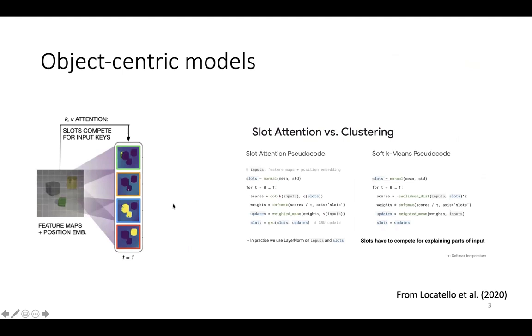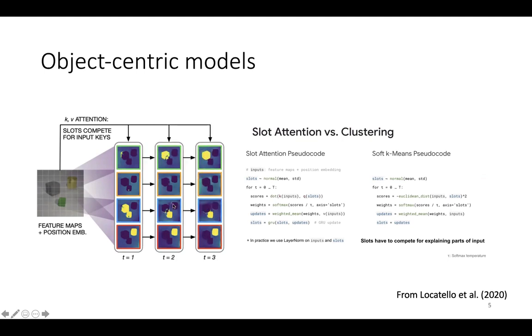Slot attention is an object-centric model that learns to encode visual scenes into a discrete set of representations. It is trained to function as an update rule that gets iteratively applied during execution time to update a random initial guess to produce a final representation that gets fed to downstream tasks. We can think of it as learning the update rule for an expectation maximization-like procedure, as you can see on the right, and empirically it has been shown to decompose visual scenes into object representations without human supervision, as you can see on the left.